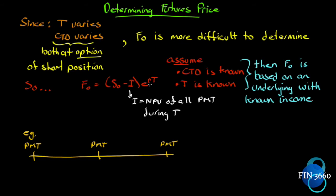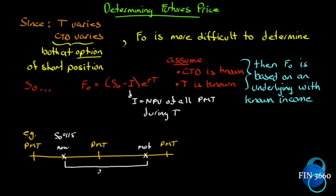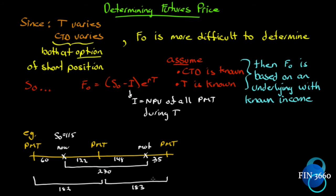Let's set up a scenario. We have a bond with semi-annual payments. Here's a payment date, here's a payment date, here's a payment date. We're going to buy it now and enter into the contract now, with the contract maturing later. We're going to straddle a payment date. The contract spans 270 days: 122 days from entry to the next payment date, and 148 days until the contract matures. We're 60 days away from the last payment date, and at maturity there will be 35 days left to the next payment. There are 182 days in one coupon period and 183 days in the next.